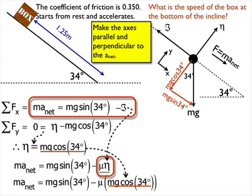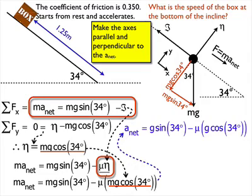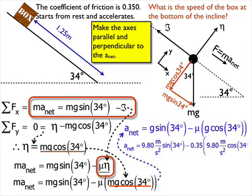I'm getting there, but I want to find ma net because that a is the same a that's in all the acceleration variables in kinematics. So if I solve this for a by dividing everything by mass, a is equal to g sine 34 minus mu g cosine 34. Put in my numbers and solve it. I get my net acceleration to be 2.64 meters per second squared. So I'm a little more than halfway there in solving the problem.